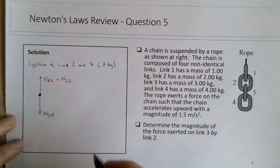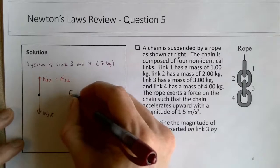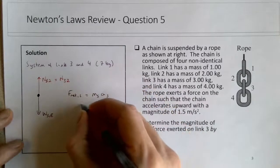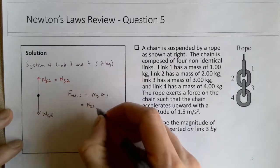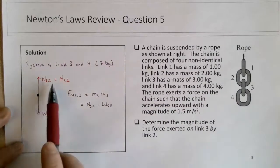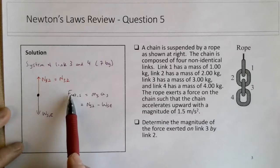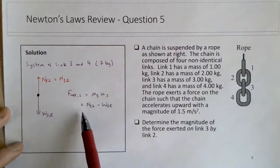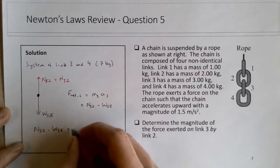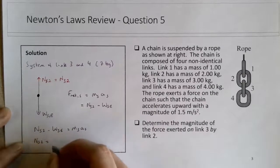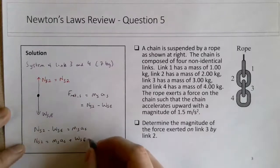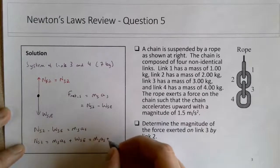So we know that the net force on the system would be equal to the mass of the system times A of the system. So taking this particular equation here, we see that NS2 minus weight SE equals MSAS. So NS2 will be equal to MSAS plus weight SE, which is equal to the mass of the system times A of the system plus the mass of the system times g.